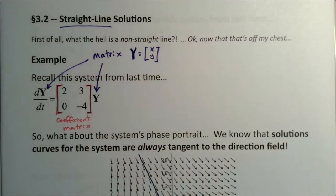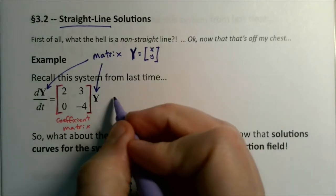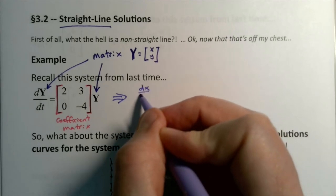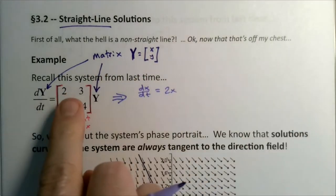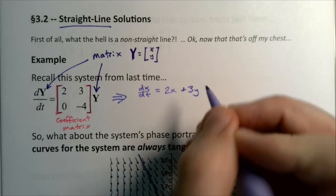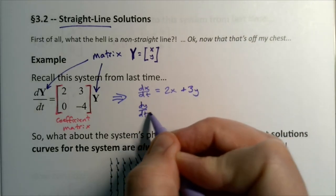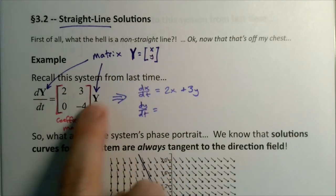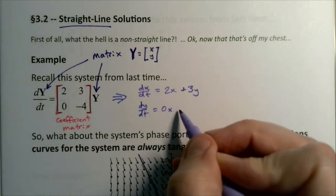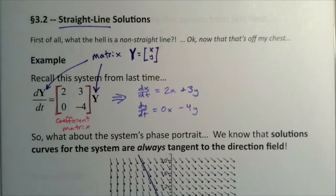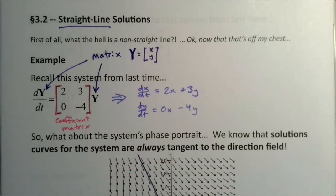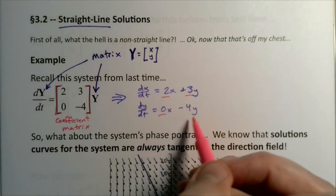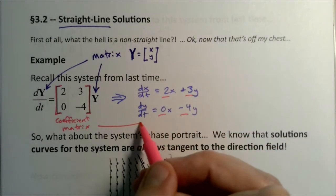If you multiply this coefficient matrix by that matrix, you will get a system of two differential equations, the top being dx/dt and the bottom being dy/dt. Just as a refresher, remember that this guy right here is the thing that we call the coefficient matrix. By multiplying that coefficient matrix by this column vector, we wind up producing a system of differential equations which is equivalent to this matrix equation.